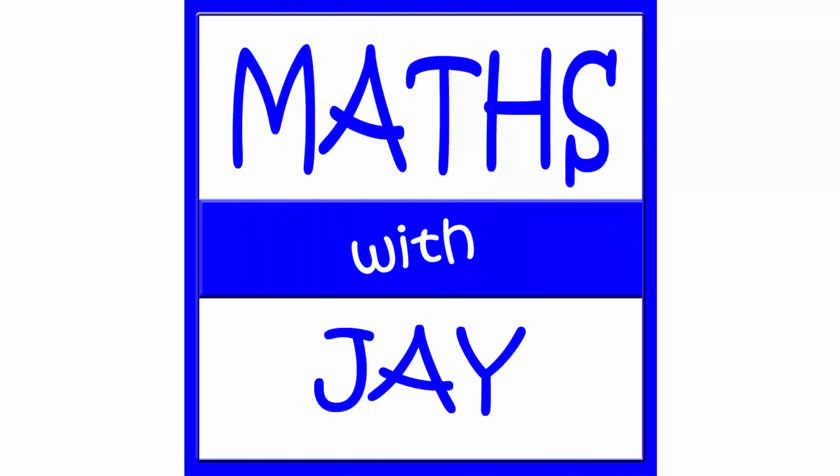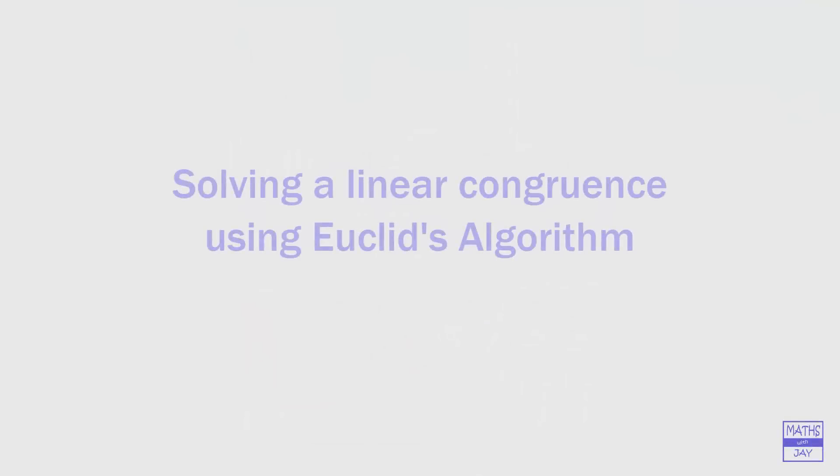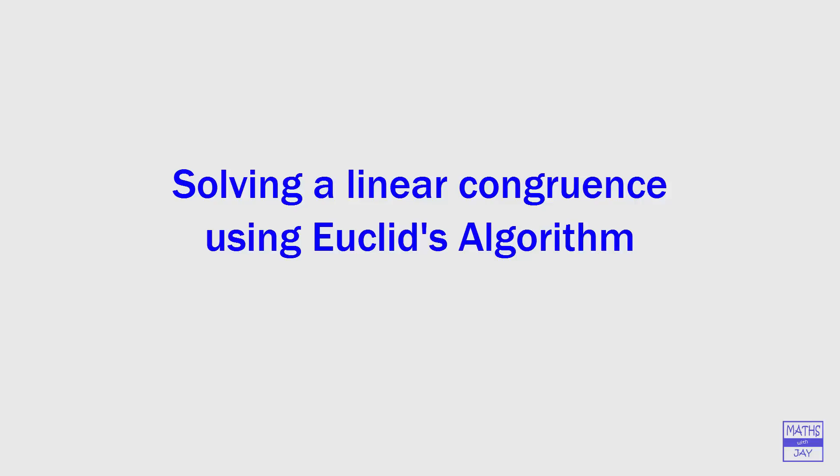Hello and welcome to Maths with Jay. In this video we're going to solve a linear congruence. So here 17x is congruent to 3 mod 29.